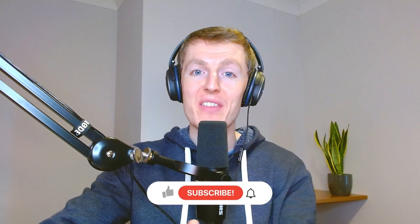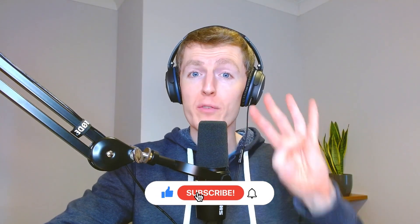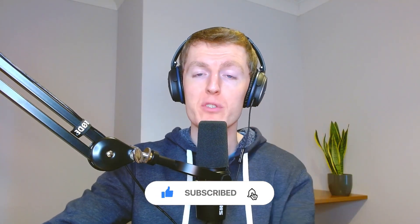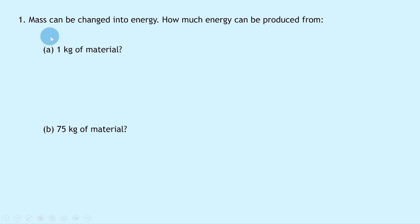Welcome back. In this video we're going to go over four worked examples to show you how to do problems involving Einstein's mass-energy equivalence. If you haven't already done so, check out my previous video covering the theory on this topic so you'll be able to understand what we do in this one. Let's get started. Question 1 says: mass can be changed into energy — how much energy can be produced from one kilogram of material?